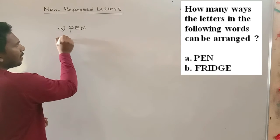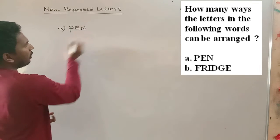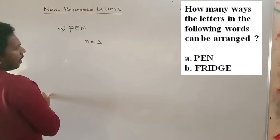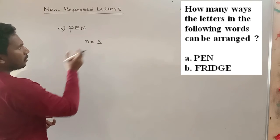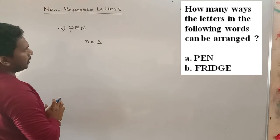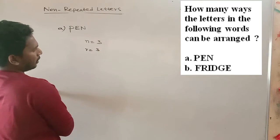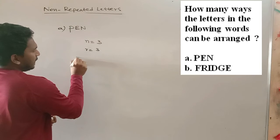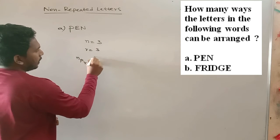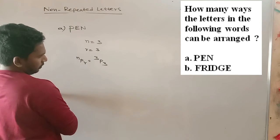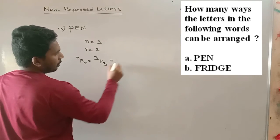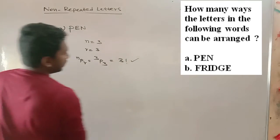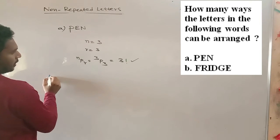So as there are 3 letters, 3 alphabets in the word pen, our n is equals to 3. After rearrangement also we will be having 3 alphabets only. So that's why r is 3 only. So according to our formula, it is NPR, that is 3P3. So that is equals to 3 factorial. So this is for the first word given.